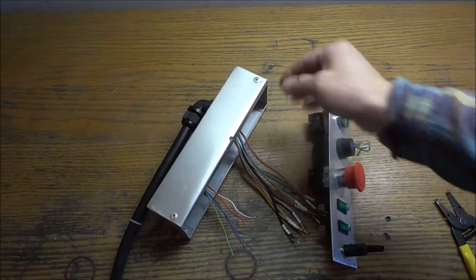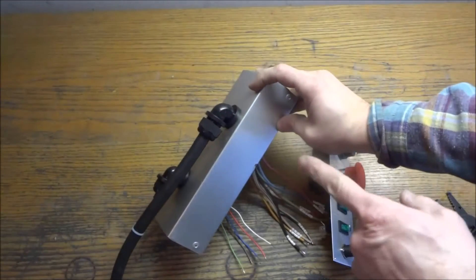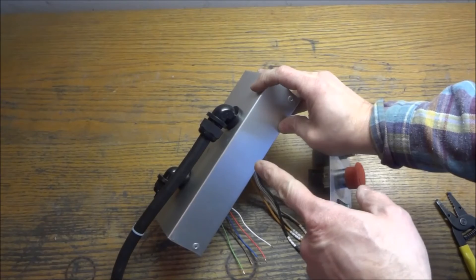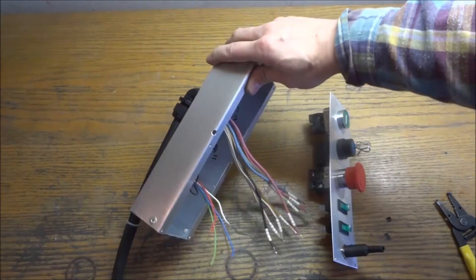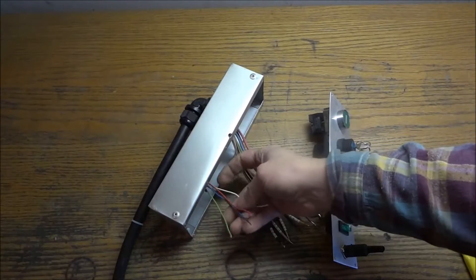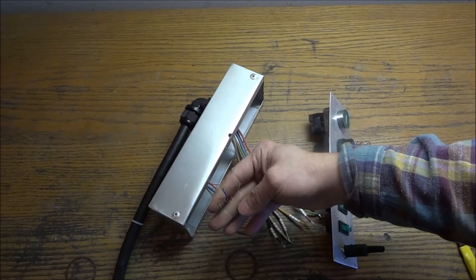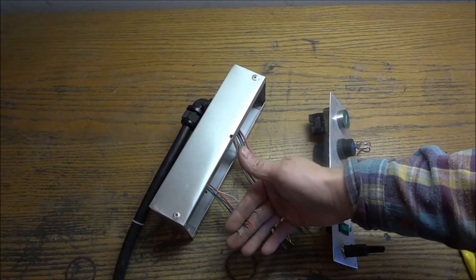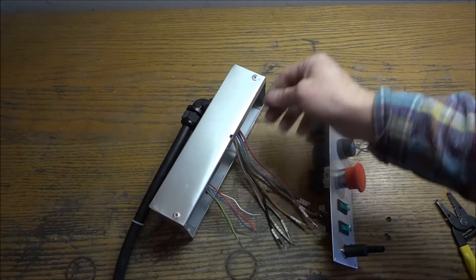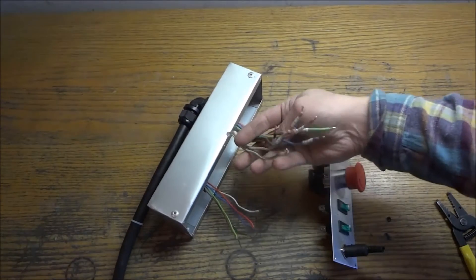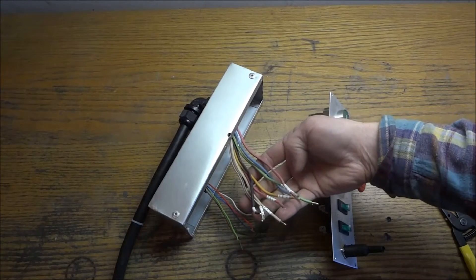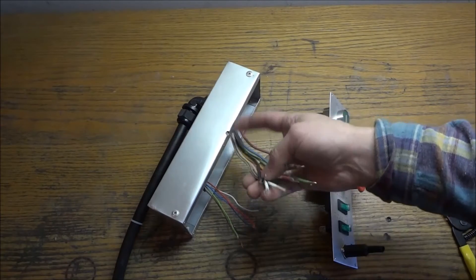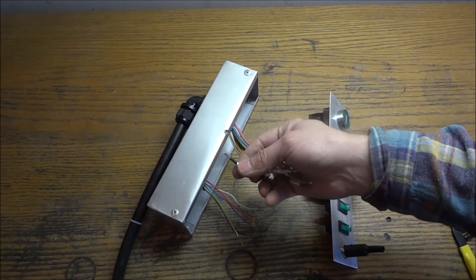Ok so I went ahead and prepped my control panel. As you can see I've got my 90 degree liquid tight connectors and I've ran my two cables. This is the 18 gauge 5 conductor wire and then this is the 16 gauge 8 conductor and all the wire numbers are labeled and I've also tinned the ends of the wires.